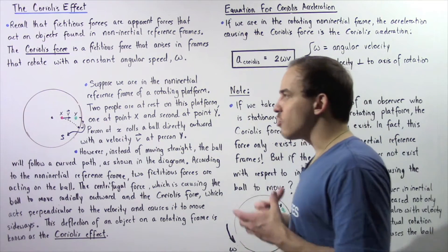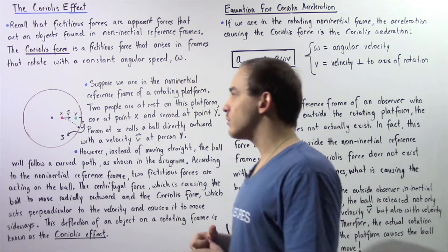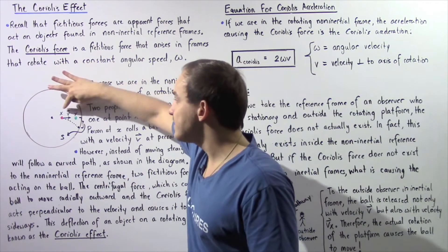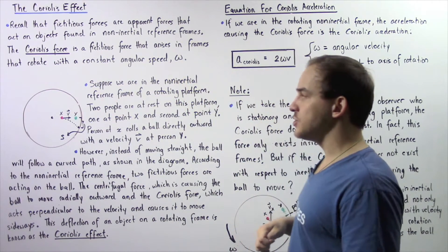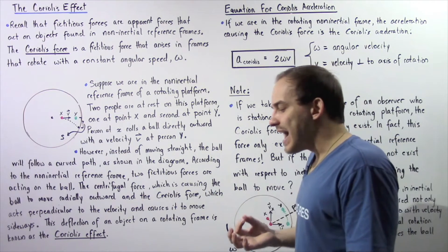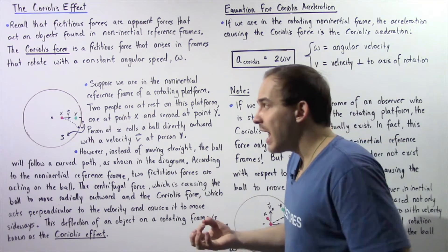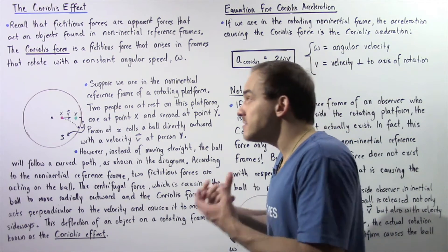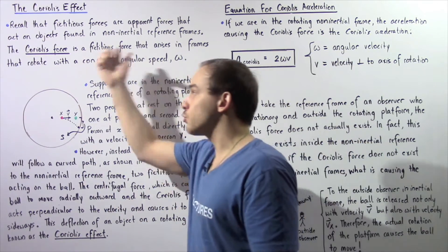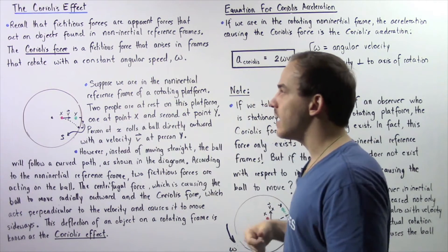Let's suppose we have a rotating circular platform as shown in this diagram, and we have two people standing — one at position X and the second one at position Y on that rotating platform. If we're inside this non-inertial reference frame, to the people inside it seems as if they're stationary and the platform itself is stationary, and everything else around them — the world around them — is essentially rotating about.